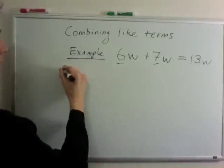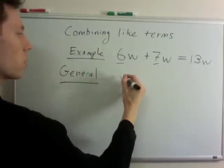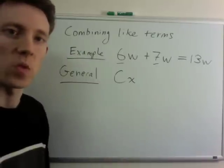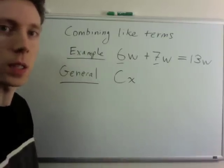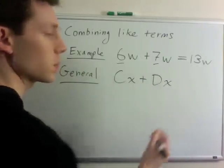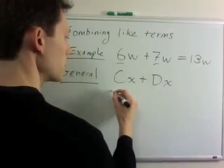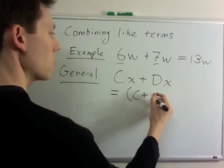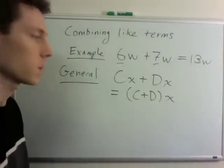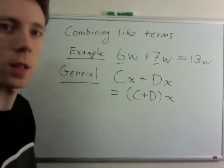The general rule is: if I have some coefficient c times any variable — or it could be a set of variables — plus some other coefficient times the same variable or set of variables, then I can simplify that expression by adding the coefficients together and writing the variable once. Usually you won't write the plus sign; you'll actually do the addition because they're coefficients.